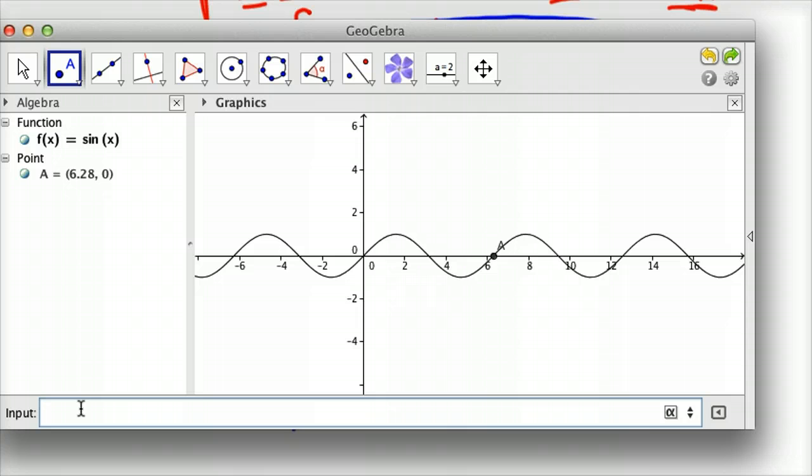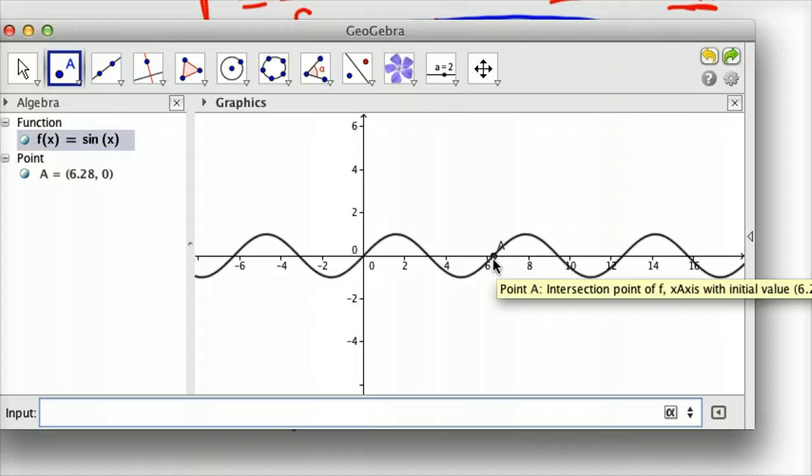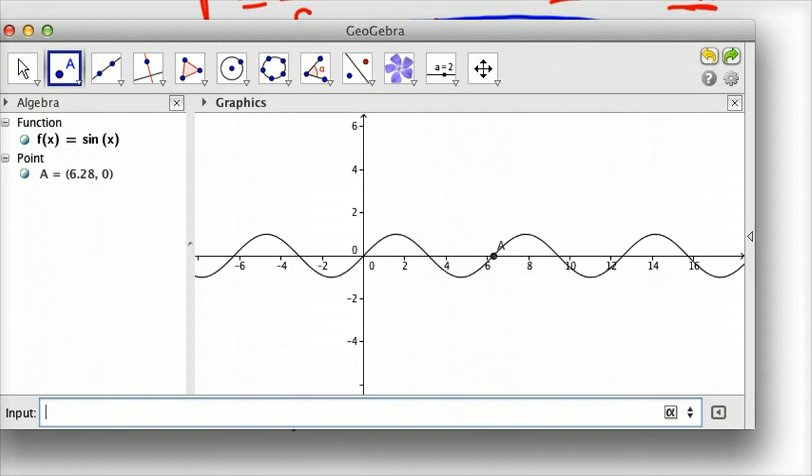Now, our function should have a crest that goes clear up here to 4, down to negative 4, up to 4, down to negative 4, twice by the time we get here. So let's plug that in and see what it looks like.